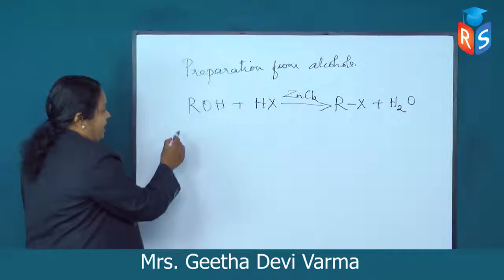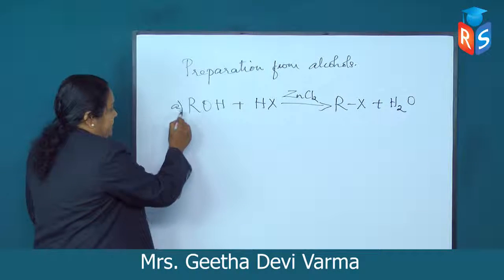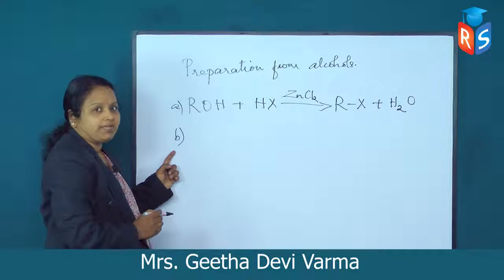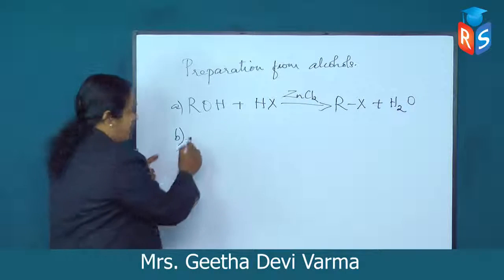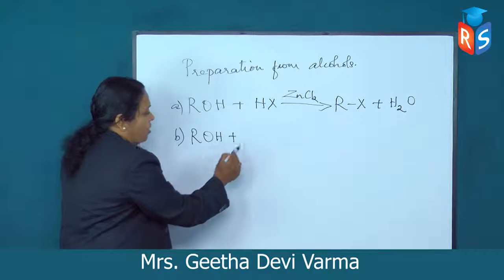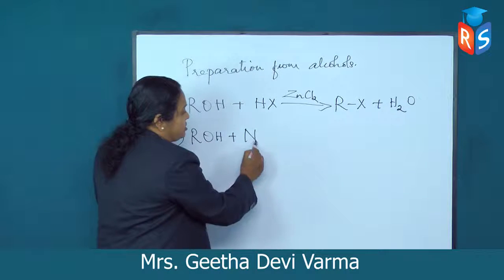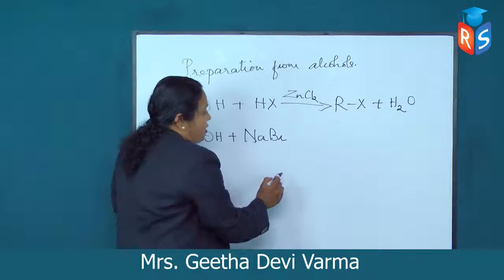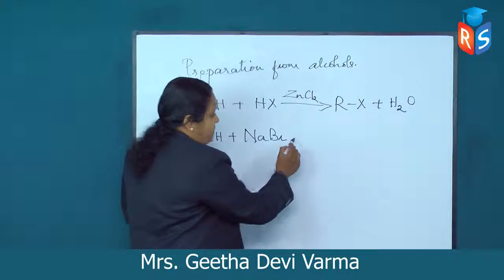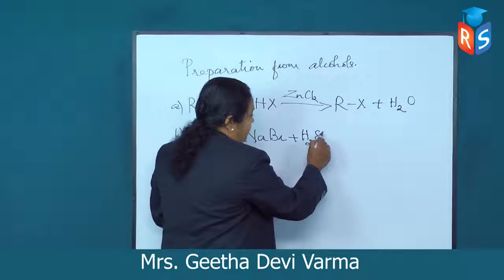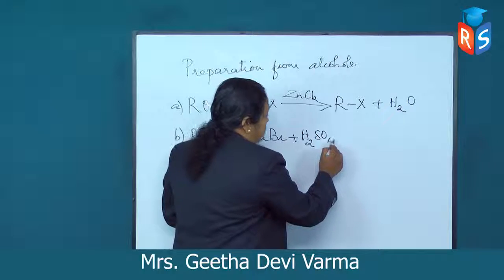A second method of preparation is when an alcohol is made to react in the presence of sulfuric acid and sodium bromide, resulting in the corresponding haloalkane compound.